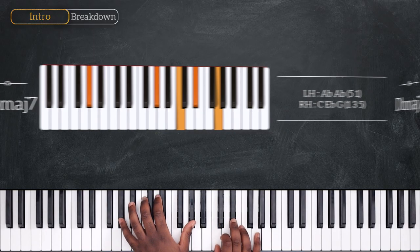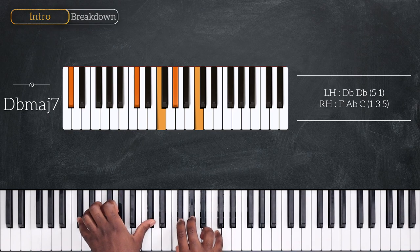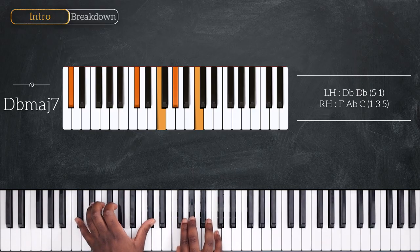And then we're going to switch, using the same position and voicing to play Db major 7. With octave Db, F, Ab and C.